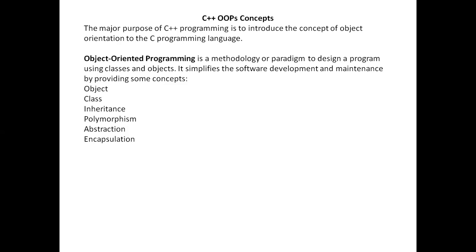For example, take the integer data type in C language. The operations you can perform on integer data types — addition, subtraction, multiplication, division — are already defined within the language itself. So you don't have to specifically define those operations for the integer data type. Same is the case with the float data type. Whereas when you define your own user defined data type, it is your duty to mention the operations that can be performed on that data type.